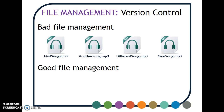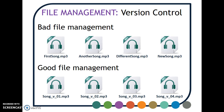An example of good file management is this. You've got 'song underscore V', which stands for version, 'underscore 01'. The reason we have the zero is because you could end up with versions 11, 12, 13, 14 — that is more than possible. Your second one then is 'song underscore V underscore 02', which would be version two. When they're saved in a folder, because they've got the same file name, they'll go one underneath the other, so you're not hunting around for the different versions.